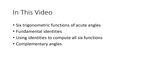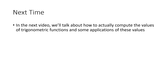So what did we talk about in this video? We talked about how to compute the six trigonometric functions of acute angles. We talked about fundamental identities and how to use those identities to compute all six functions of a given angle. And we talked about complementary angles. Next time we'll talk about how to actually compute the value of trigonometric functions for certain angles, both analytically finding exact answers and also computationally using a calculator. And after that, we'll talk about applications of trigonometric ideas.